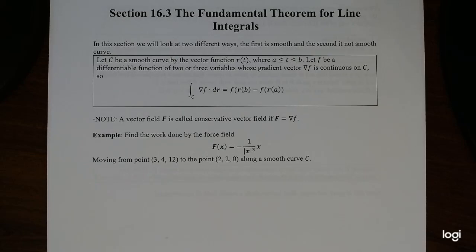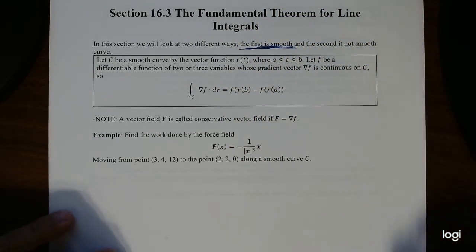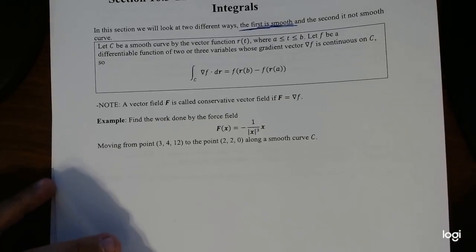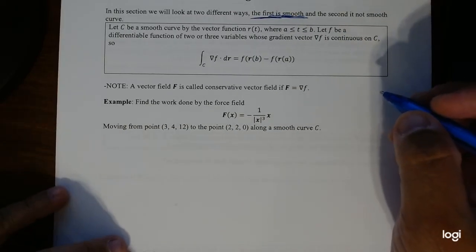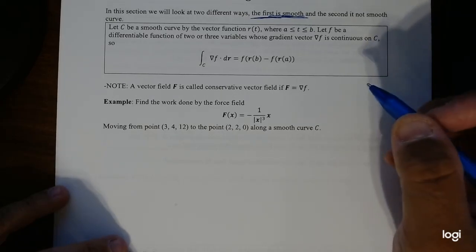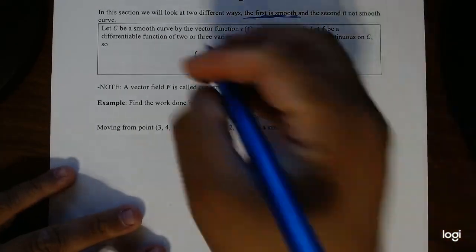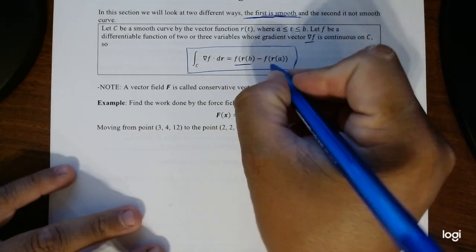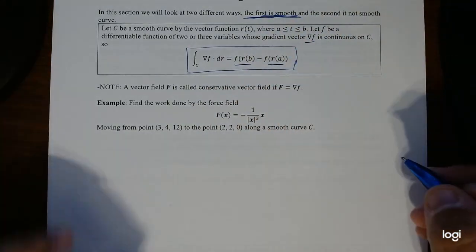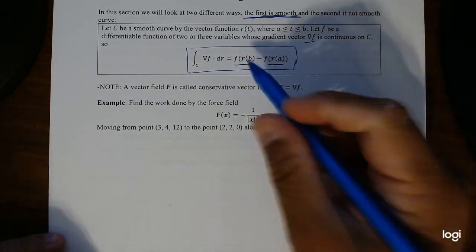In this section we're going to talk about two different types of curves: a smooth curve, and when it's not a smooth curve. First, a quick definition: let C be a smooth curve with a vector function r(t), where t is between a and b. Let f be a differentiable function with two or three variables whose gradient vector is continuous. The line integral over a curve of a gradient is equal to f(r(b)) minus f(r(a)).